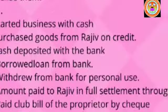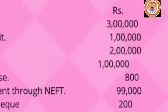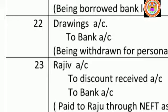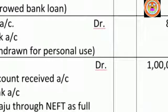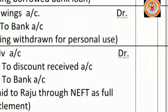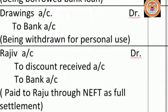January 22: withdrew from bank for personal use, ₹800. Raja withdraws money from the bank for personal use. When the proprietor withdraws money from the business for personal use, the proprietor is the receiver. So drawings account must be debited. According to the personal account rule — debit the receiver — drawings account is debited.